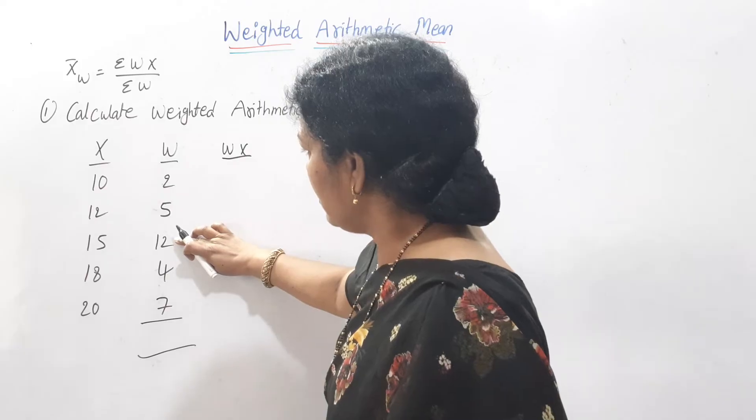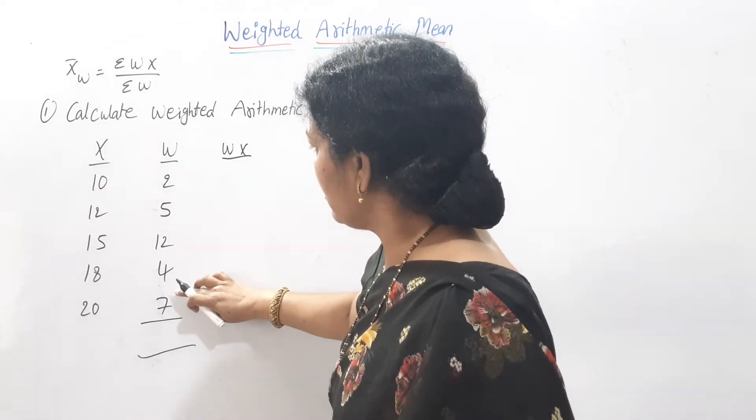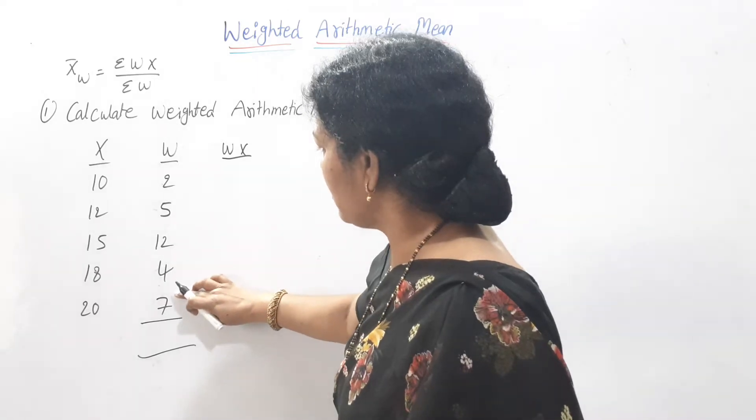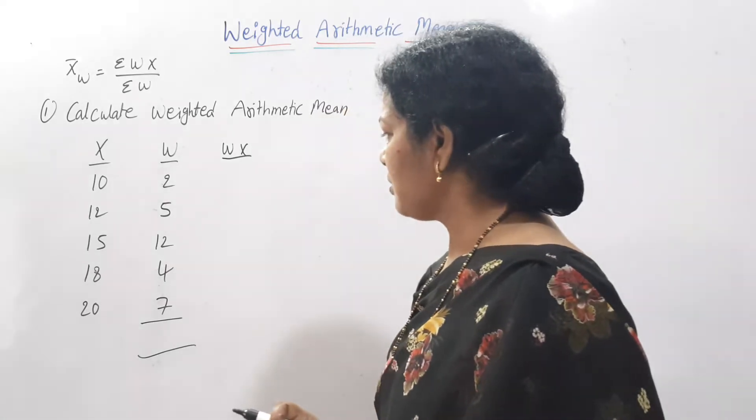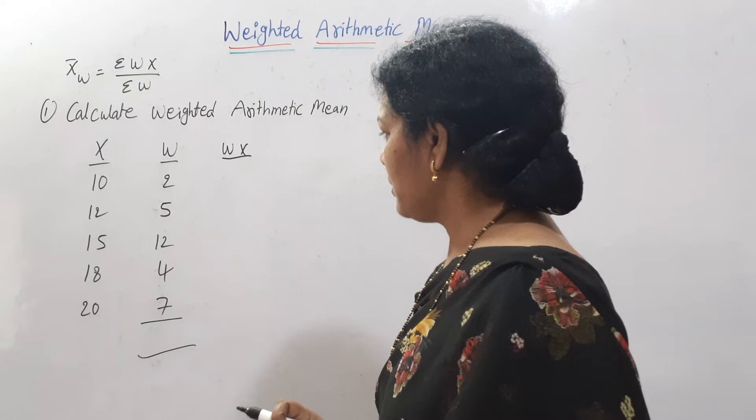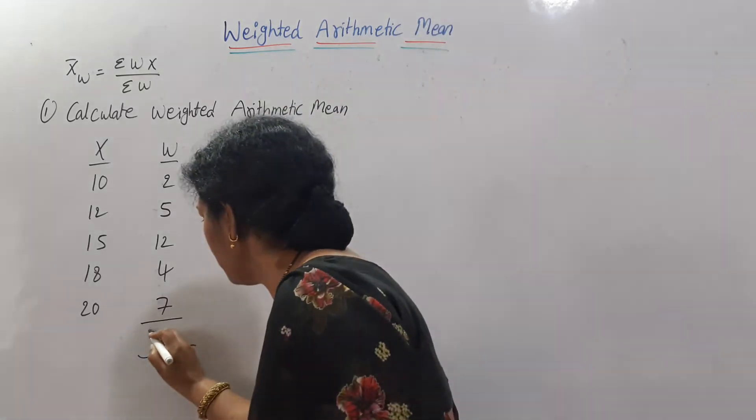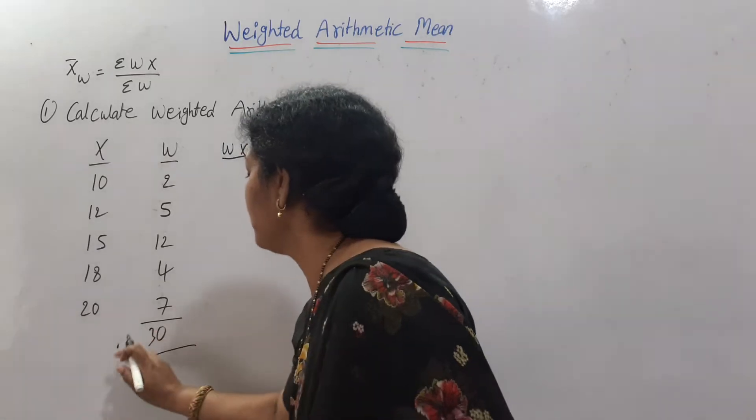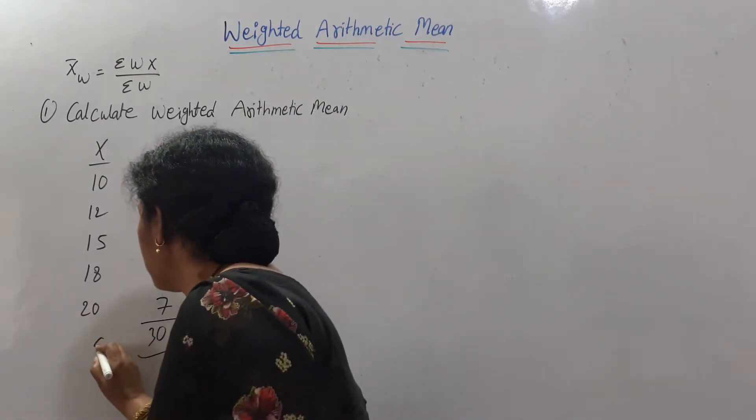This is 7, 17 plus 17, 27, 28, 29, 30. This is Σw, so Σw is 30.